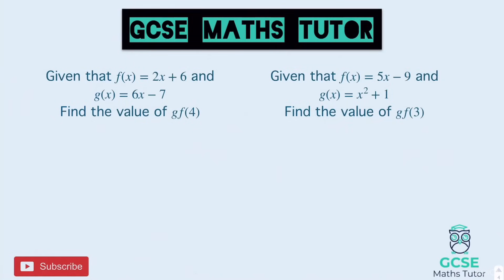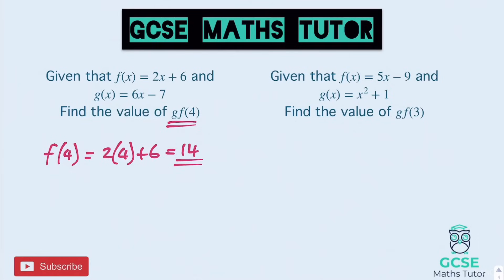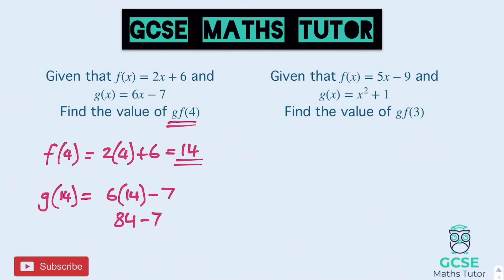So this first one says find gf(4) — what is g when f is 4? Let's work out f(4) to start with. Subbing 4 into f, we get 2 lots of 4, plus 6. 2 lots of 4 is 8, plus 6 is 14. So we get 14 when we put 4 into f — that's the number we're going to put into g. So g(14): we have 6 lots of 14, take away 7. 6 times 10 is 60, 6 times 4 is 24, so that's 84. 84 take away 7 leaves us with 77. And 77 is our final answer.